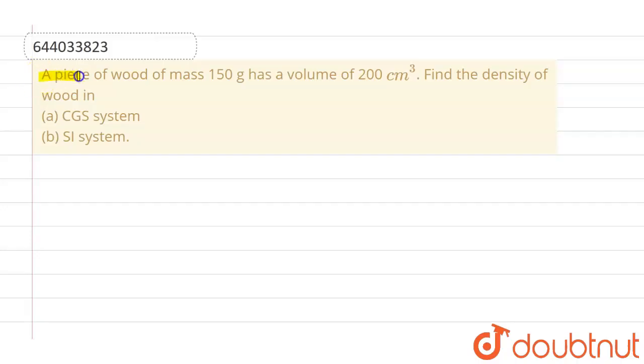This given question is: a piece of wood of mass 150 grams has a volume of 200 centimeter cube. We have to find out the density of wood in CGS system as well as in SI unit system.